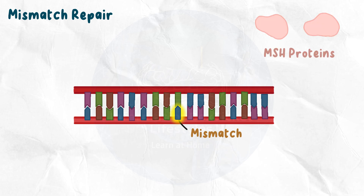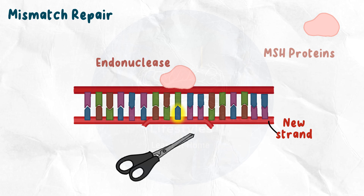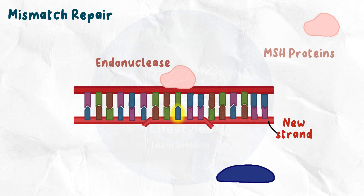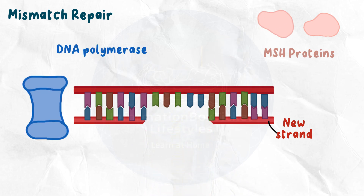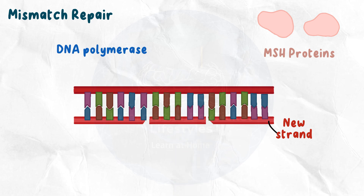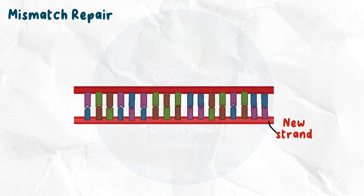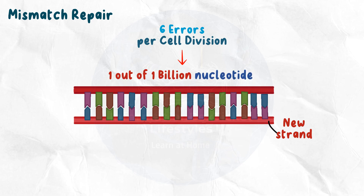The next step is mismatch repair, which uses specific proteins known as MSH proteins to rectify any remaining errors after replication. When MSH proteins detect a mismatch in a newly manufactured strand, they summon an enzyme called endonuclease, which severs the nucleotide links from the DNA strand. The damaged piece of DNA is then removed by exonuclease, creating a gap in the daughter strand. DNA polymerase patches the gap with new nucleotides, and finally DNA ligase binds the links, effectively repairing the damage. Even mismatch correction leaves a small number of mistakes — about 6 per cell cycle, or 1 out of every 1 billion nucleotides.